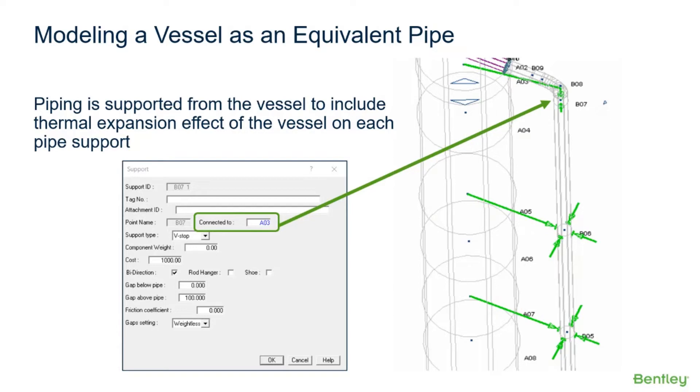So an example is shown here. The guide at point B7 is connected back to the centerline of the vessel at point A3.